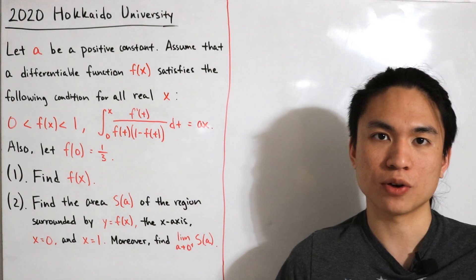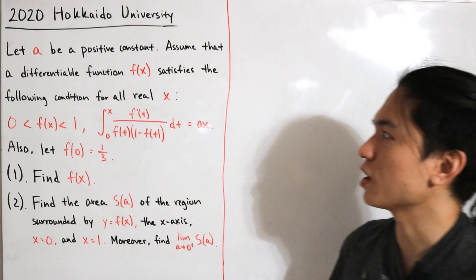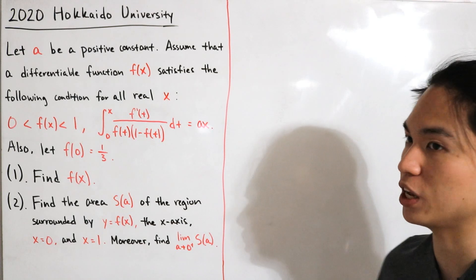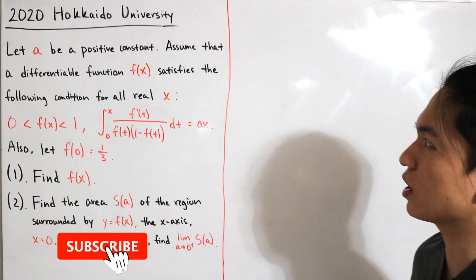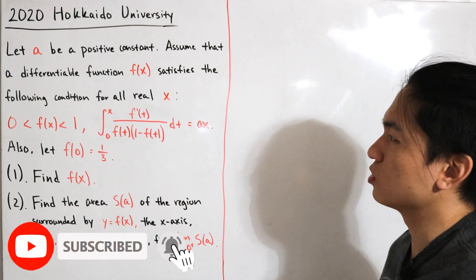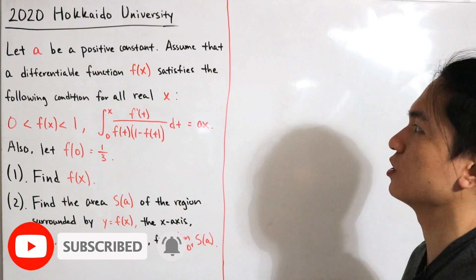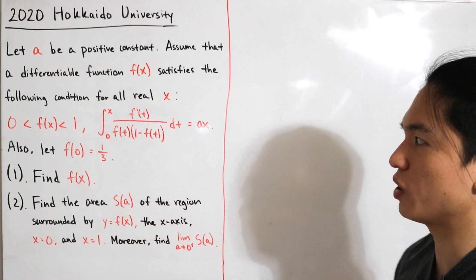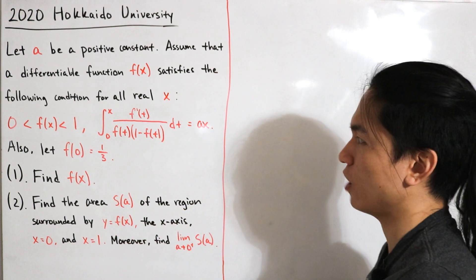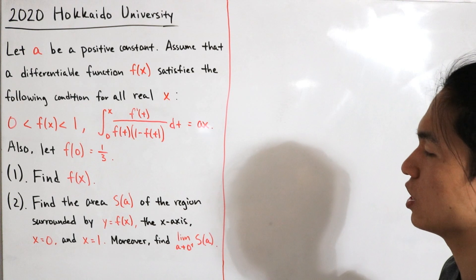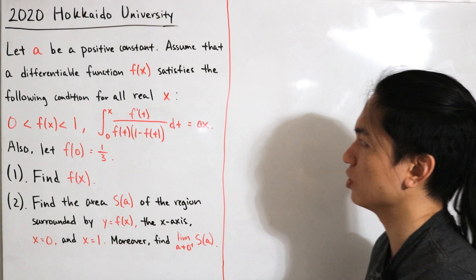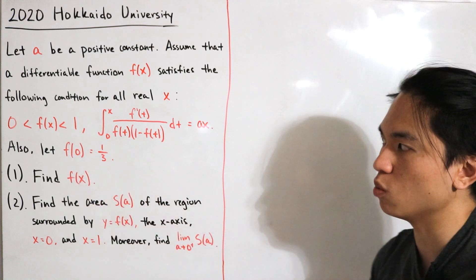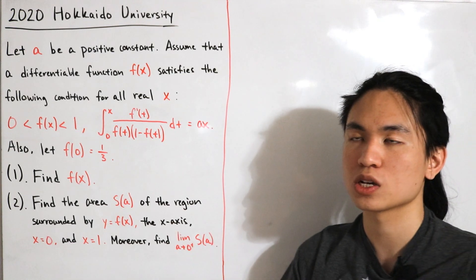Welcome back. Today we have a college exam question from the 2020 Hokkaido University in Japan. Let a be a positive constant, and assume that a differentiable function f(x) satisfies the following condition for all real x: the range lies strictly between zero and one, and the definite integral from zero to x of f'(t) divided by [f(t)(1 - f(t))] dt equals the linear function a times x. Also given: f(0) = 1/3.